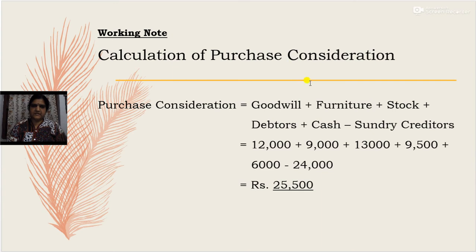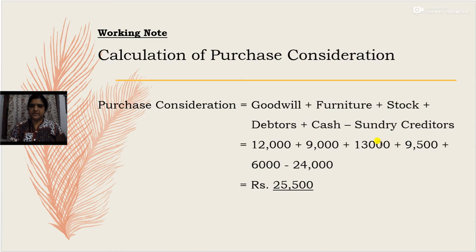Calculation of purchase consideration as a working note: goodwill Rs. 12,000 plus furniture Rs. 9,000 plus stock Rs. 13,000 plus debtors Rs. 9,500 plus cash Rs. 6,000, minus sundry creditors Rs. 24,000. This comes to Rs. 25,500. So the amount of purchase consideration is Rs. 25,500.